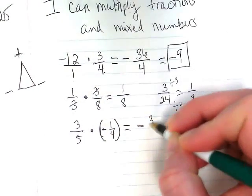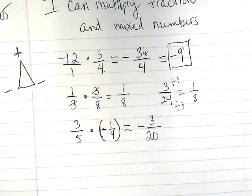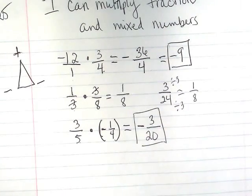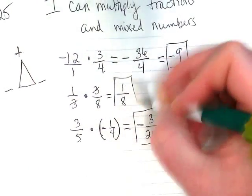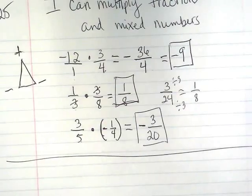And I'm going to multiply straight across. 3 times 1 is 3. 5 times 4 is 20. That cannot be reduced anymore. So that's our answer. I should box this one, too, just so it looks nice and clean. There we go. Except I crossed it out on accident.